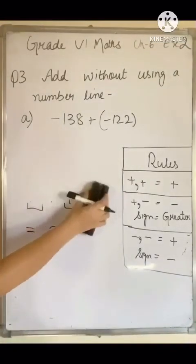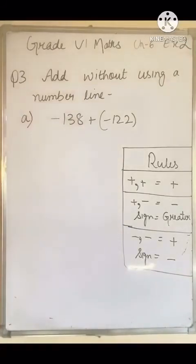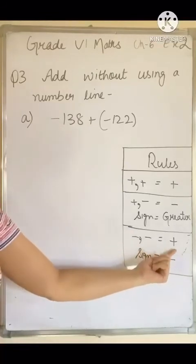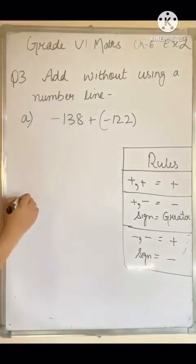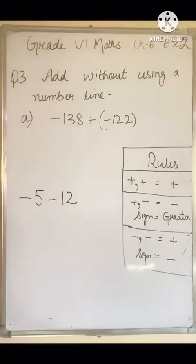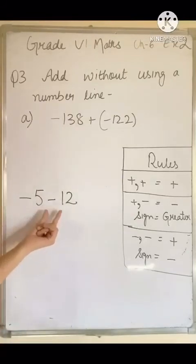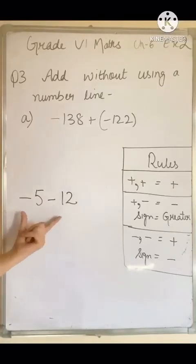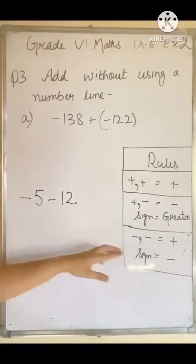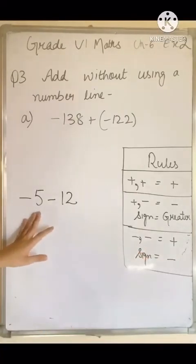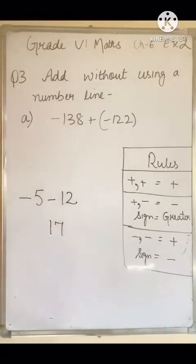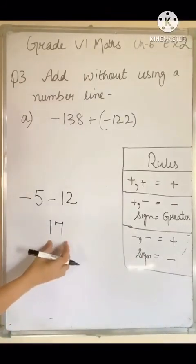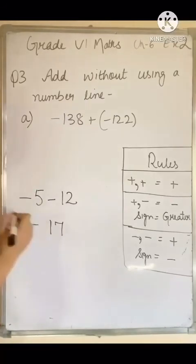Rule number 3: if we have two integers and both have negative signs, we are going to add those integers. For example, minus 5 minus 12. Both 5 and 12 have negative signs, so by rule 3 we add them: 12 plus 5 equals 17. The sign of the result is always negative, so the answer is minus 17.